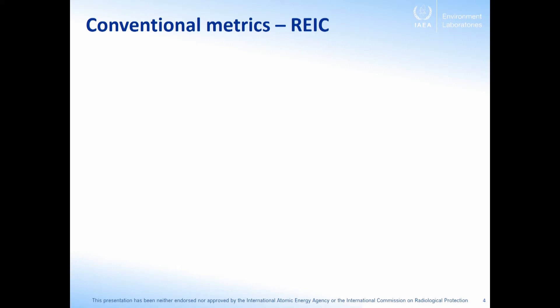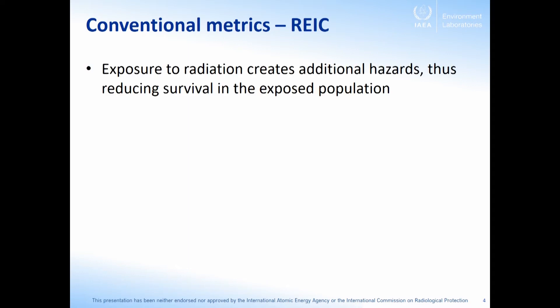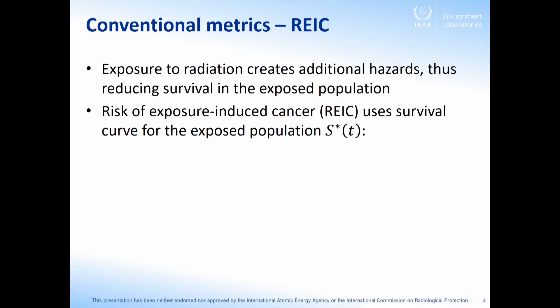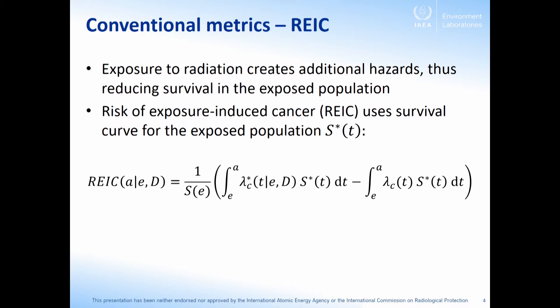Another conventional metric, already mentioned today in Mark Shaver's talk, is the risk of exposure-induced cancer or exposure-induced death. This quantity was introduced because it explicitly acknowledges that exposure to radiation creates additional hazards which may reduce survival in the exposed population. Accordingly, it uses the survival curve for the exposed population in its calculation of attributable risk.